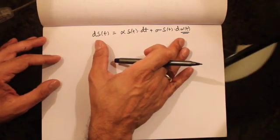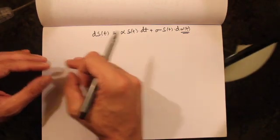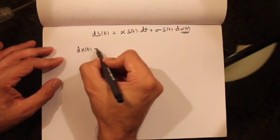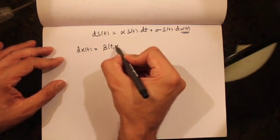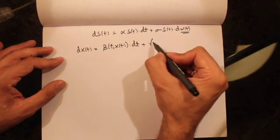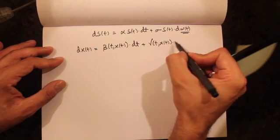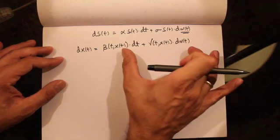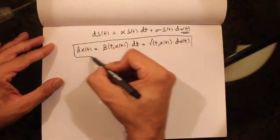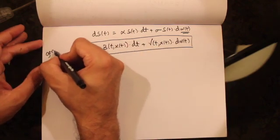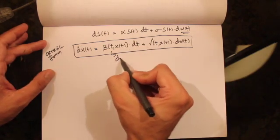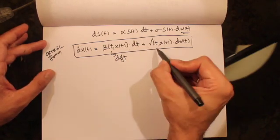This is a stochastic differential equation. A generic form of a stochastic differential equation is given by dx(t) = β(t, x_t) dt + γ(t, x_t) dW_t. Here β is called the drift and γ is called the diffusion.